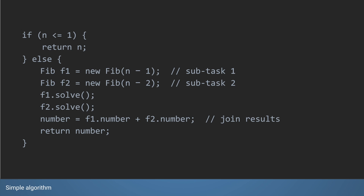To take an example: the Fibonacci sequence is a simple sequence where every number is the addition of the previous two numbers. If you want to find fibonacci(n), if n is less than or equal to one the result is n itself. If n is greater than one, fibonacci(n) is the addition of the two previous numbers. You can create two subtasks — subtask one finds fibonacci(n-1), subtask two finds fibonacci(n-2) — solve them individually in parallel, add the two results, and return the fibonacci value. This is an example of a fork join algorithm.